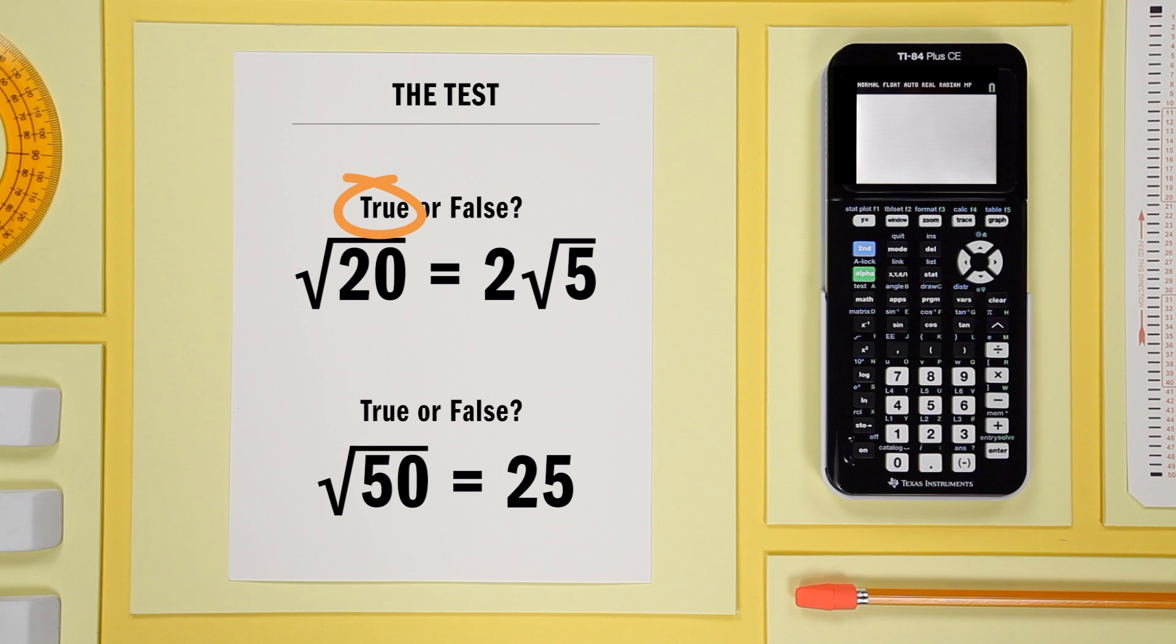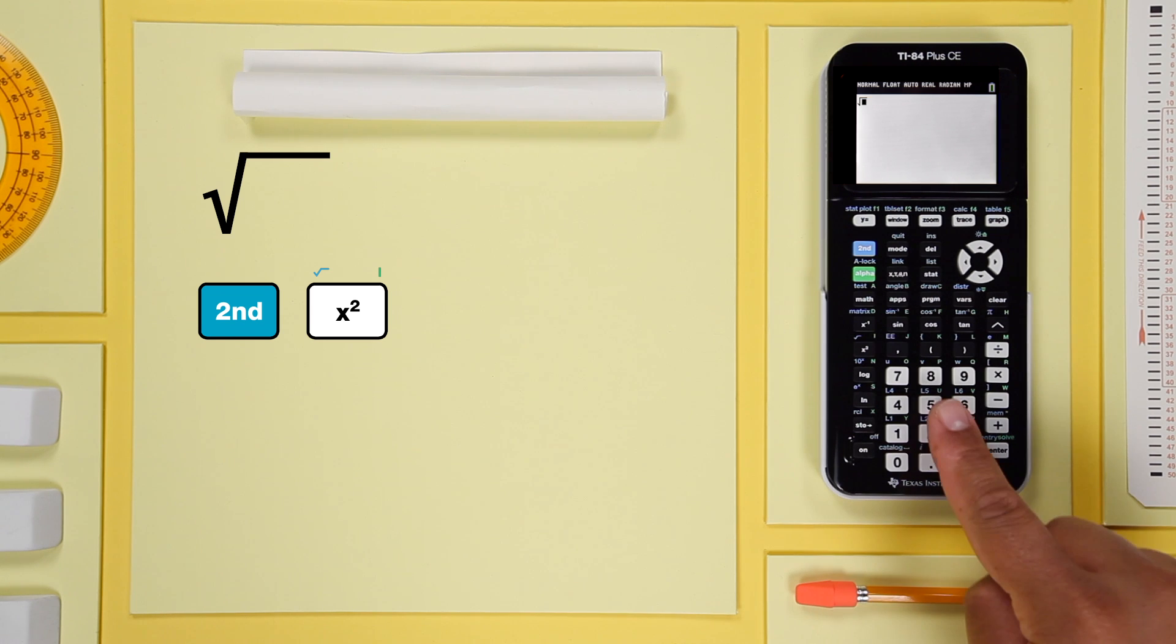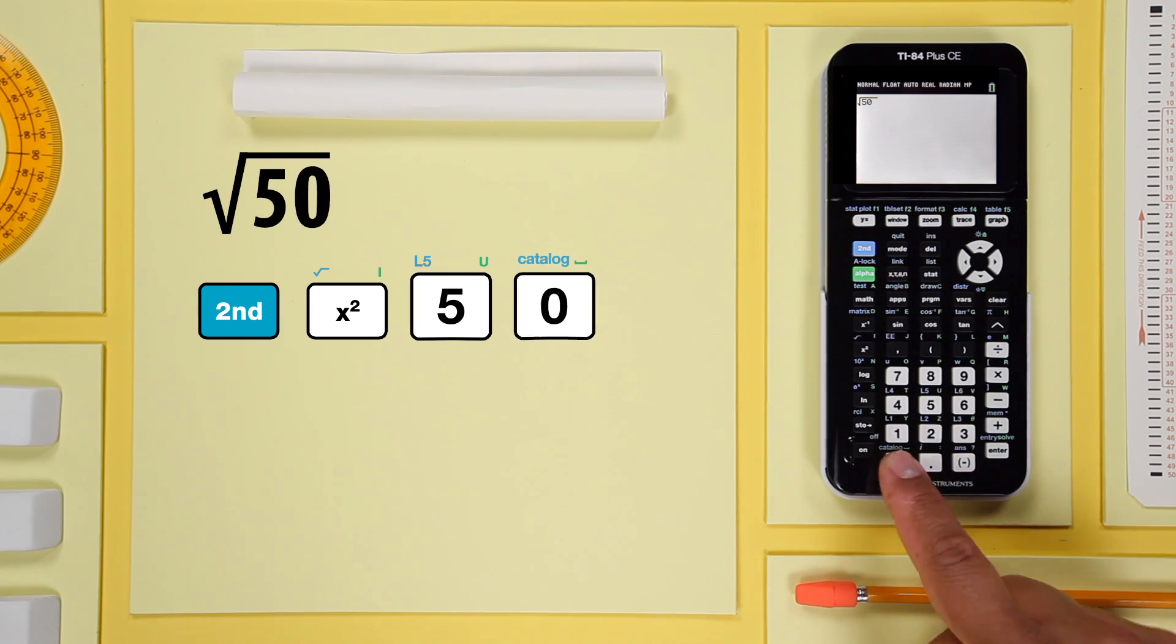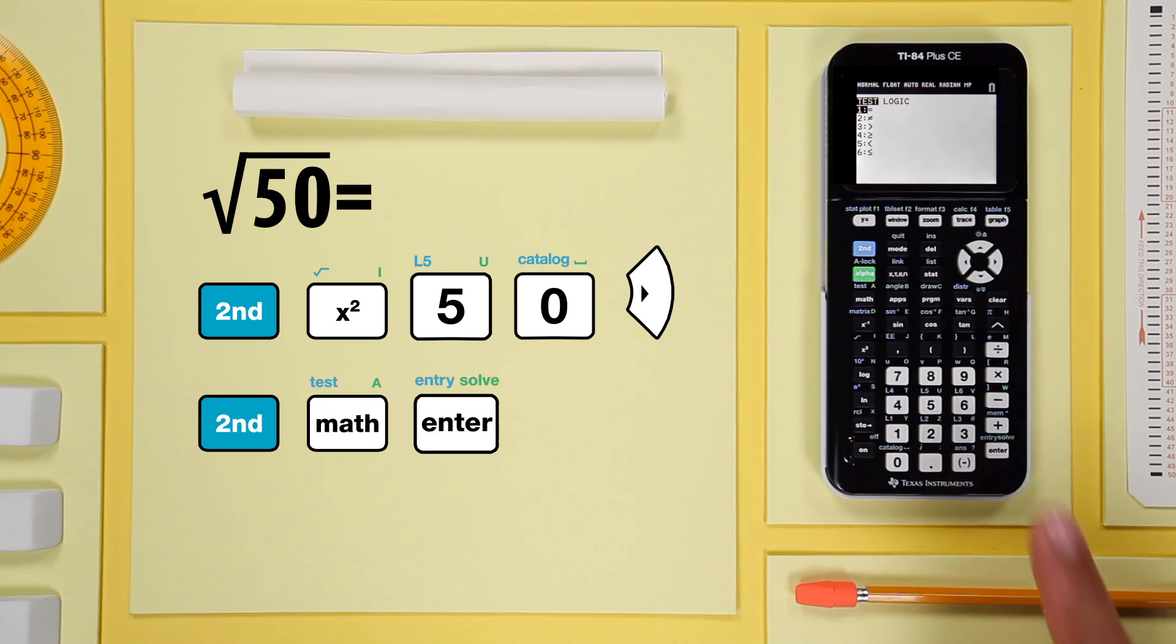I'll show you again but this time I'm going to go a little bit faster. Enter the first expression. Open the test menu. Select the equal sign. Enter the second expression.